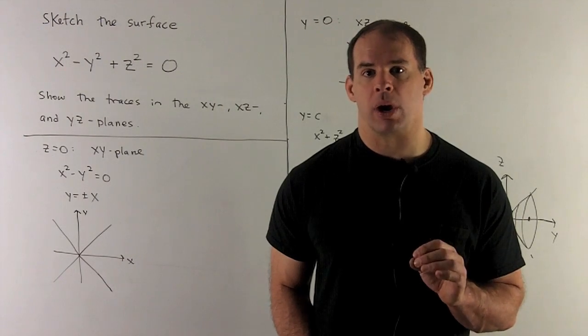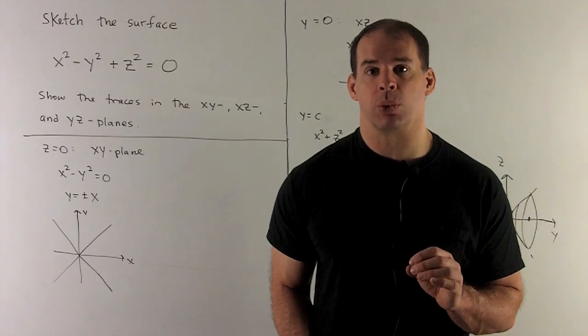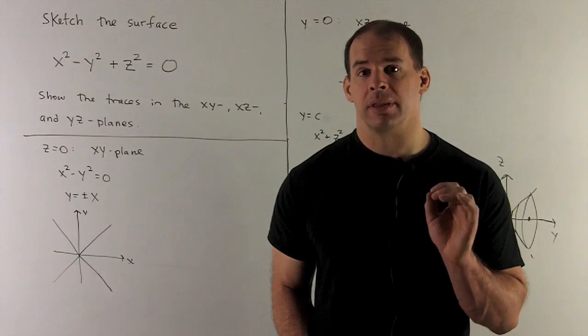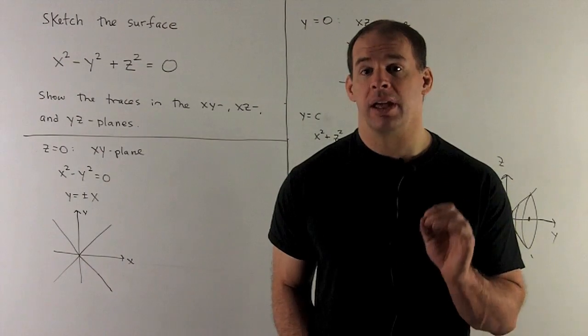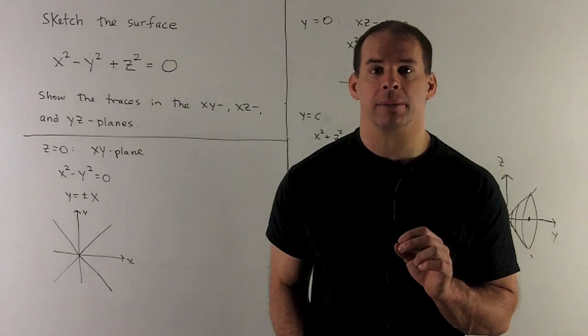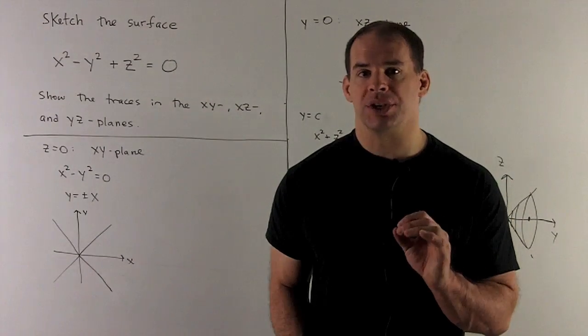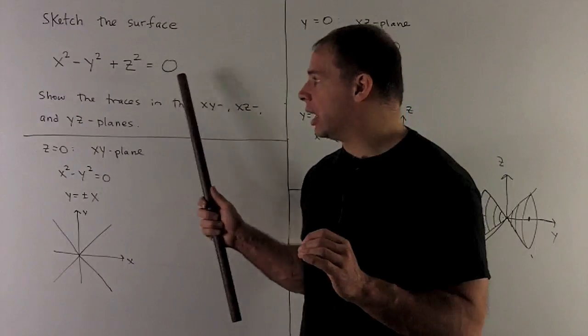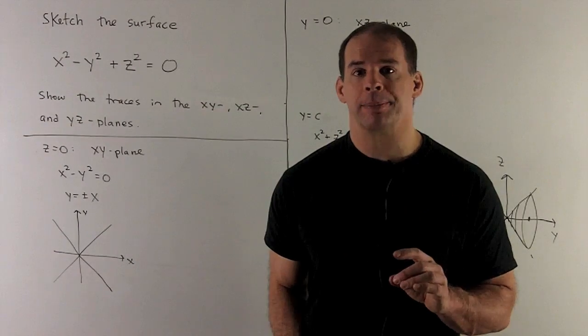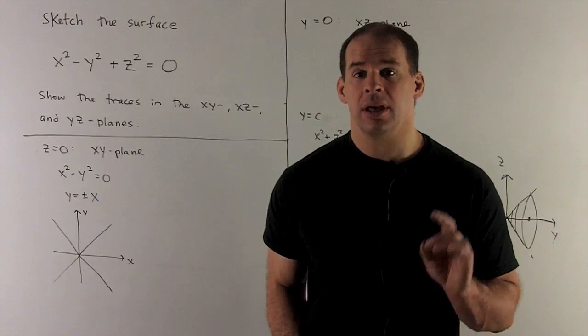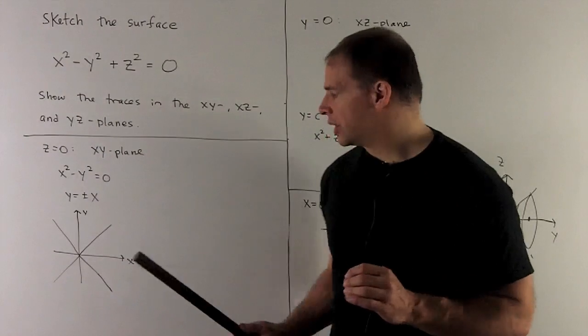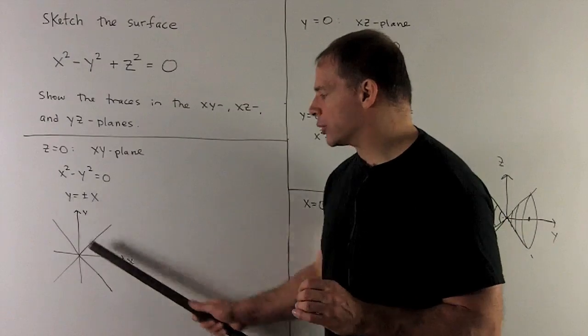Sketch the surface x² - y² + z² = 0. Sketch the traces in the xy, xz, and yz planes. First, the trace in the xy plane: we let z = 0. Our equation becomes x² - y² = 0. Solving for y, we get y = ±x. Make sure you keep your negative solution. Our trace is y = x and y = -x.